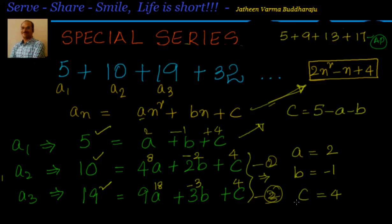That's about special series, specifically the difference method and also using aₙ = an² + bn + c. Remember, this is applicable only when the difference of the terms of the given series is in arithmetic progression. After that, we equate a₁, a₂, a₃ to the formula and find the values of a, b, c. Thanks for visiting. See you in the next session. Bye for now.